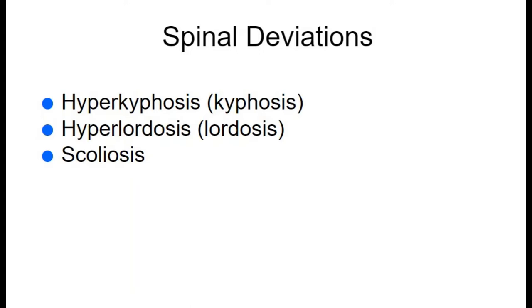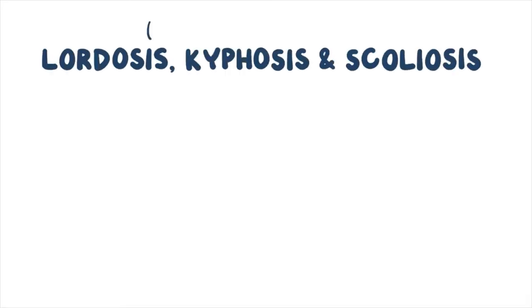We will be talking about spinal deviations first. There are normal curvatures of the human spine — kyphosis in the thoracic spine and lordosis in the cervical and lumbar regions. The deviations we're going to discuss are hyperkyphosis, hyperlordosis, and scoliosis. 'Hyper' means excessive or beyond normal. Lordosis, kyphosis, and scoliosis all refer to curvatures of the spine.